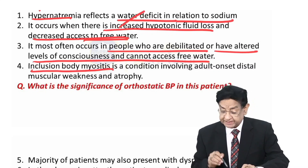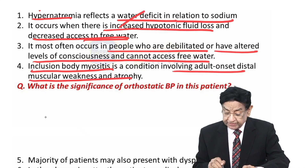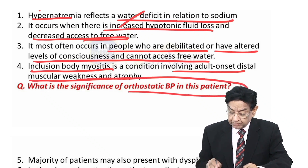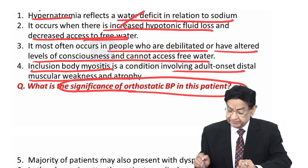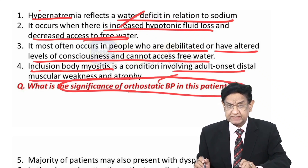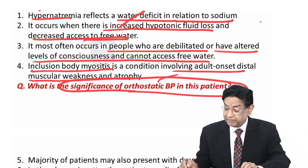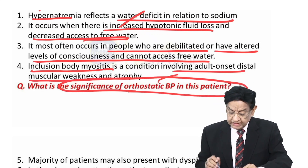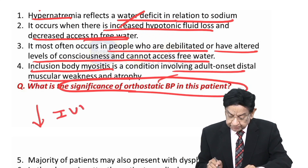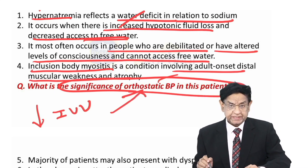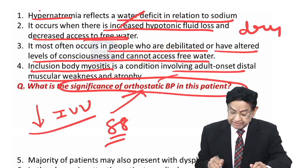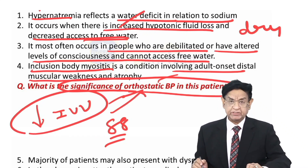This patient is suffering from inclusion body myositis, which involves adult onset, disturbed muscular weakness and atrophy. In this question, there is an orthostatic problem. The significance of orthostatic BP — BP falls on standing — is what orthostatic hypotension means. Any condition which leads to reduced intravascular volume will cause orthostatic hypotension. In this patient, systolic BP is 80, mucosa is dry, so the patient has reduced intravascular volume, which is why the patient has orthostatic hypotension.